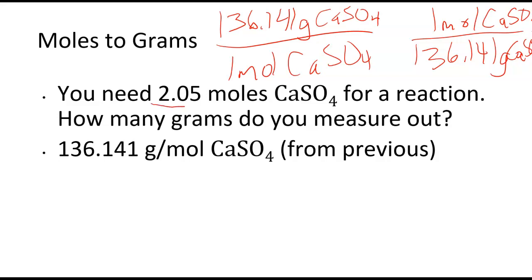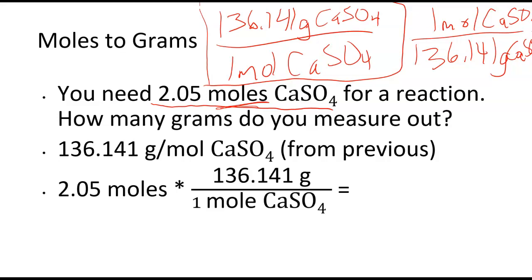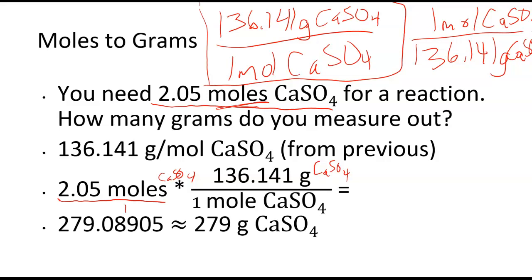So we have the 2.05 moles of calcium sulfate. So we're starting with moles and we want grams. So we're going to be using this conversion factor right here because that gets us units of grams and it's going to get rid of our units of moles. So I set it up. You can put your moles over 1 if you would like. I should have labeled this calcium sulfate. This calcium sulfate. I calculate through and I get 279.08905 or about 279 grams of calcium sulfate. So notice I've rounded it to three significant figures because my original measurement here was one, two, three significant figures.